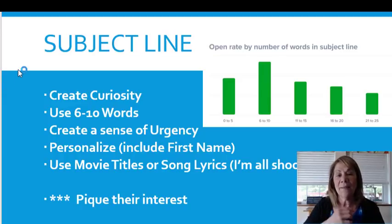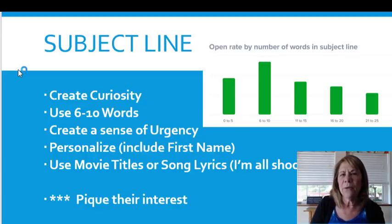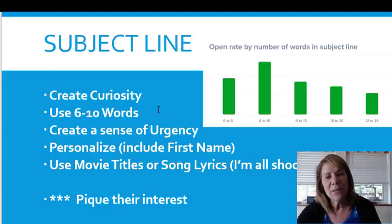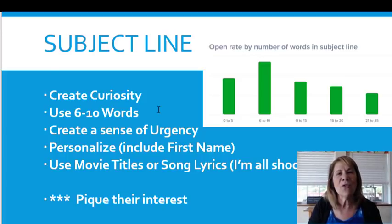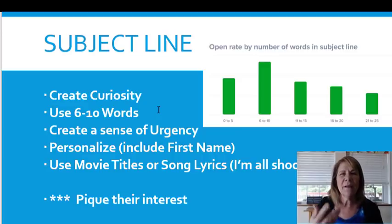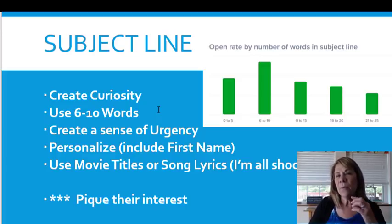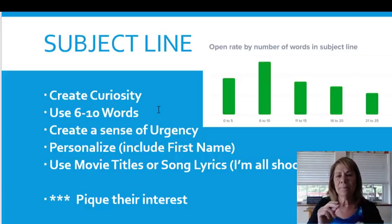The subject line is very, very important. We already probably knew that you want to create curiosity and craft that perfect subject line to get people to open it. But here's what I found interesting: subject lines that are roughly six to ten words get the highest open rate. If it's too short, there's not enough there to intrigue people. If it's way too long, you lose them. Around six to ten words fits really well on a mobile app — it's short and sweet but long enough to give some information.